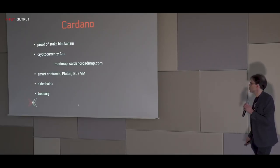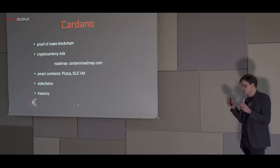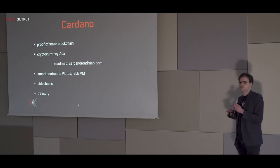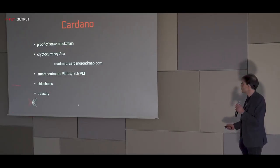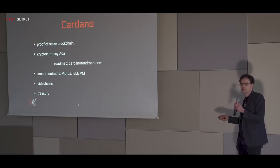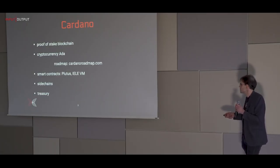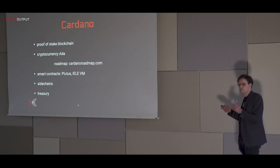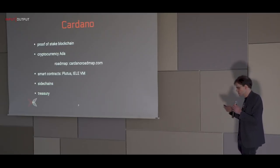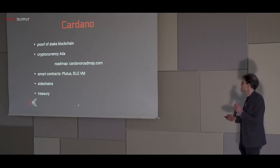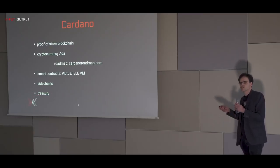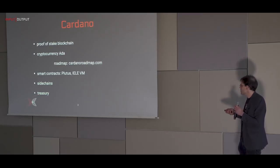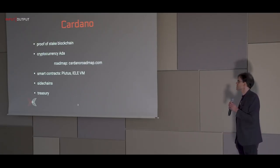Long term, we'll also add a treasury, because blockchains are about giving away control and not having a single authority deciding what happens. As long as a central authority funds implementation, you haven't fully achieved that. The idea behind treasury is that some funds from transaction fees and block rewards are set aside, and people who want to extend the system can make a proposal, then stakeholders vote on which proposals get funded.